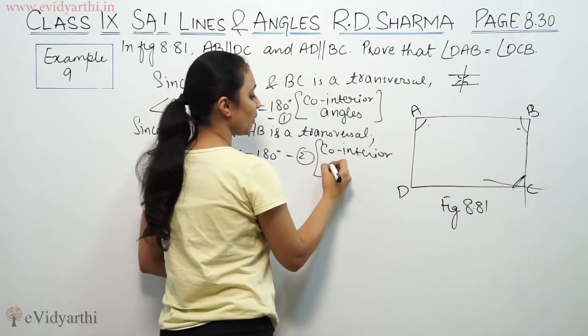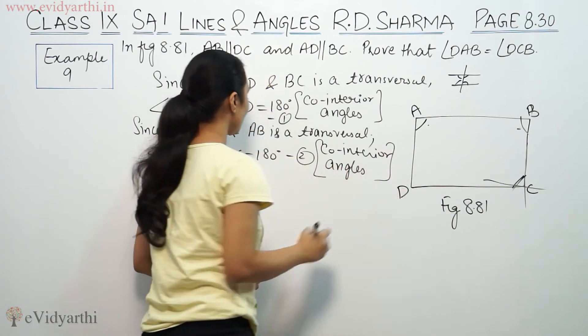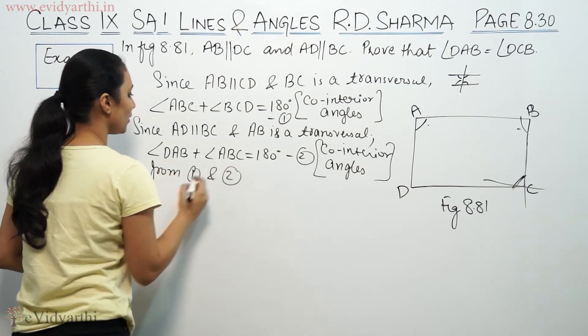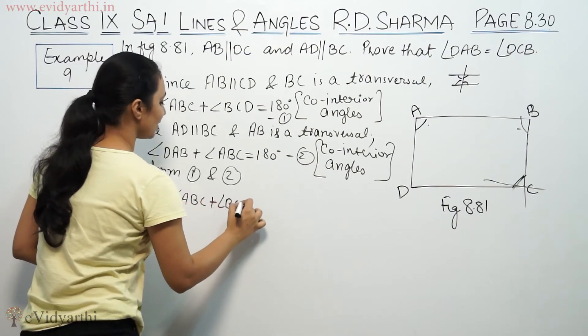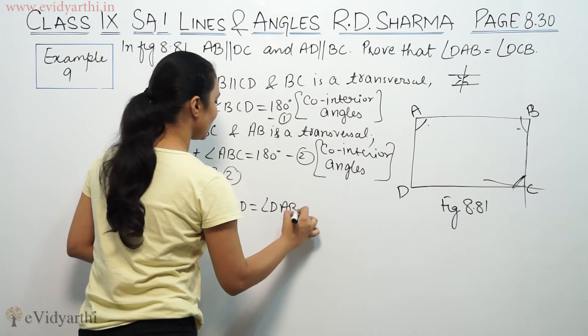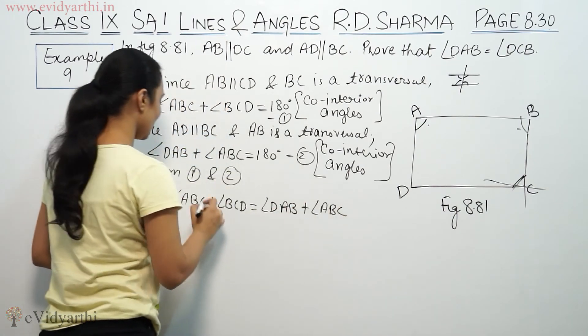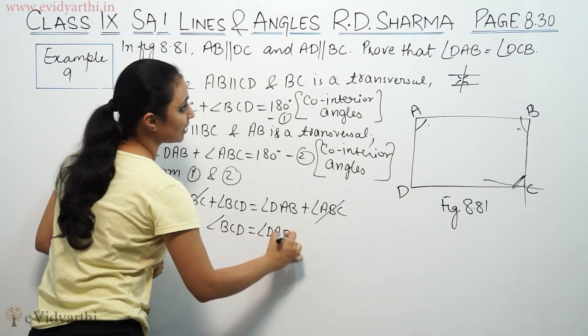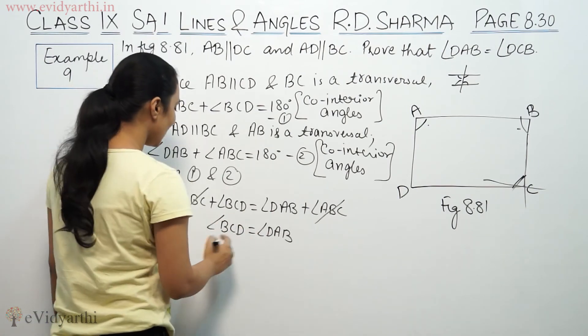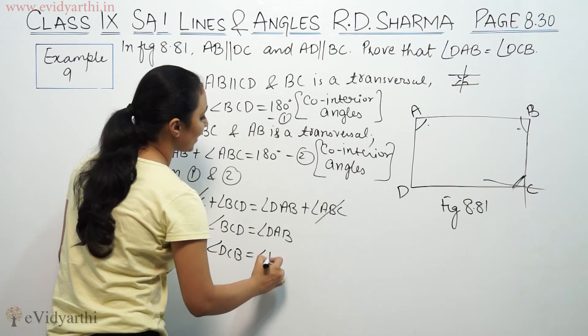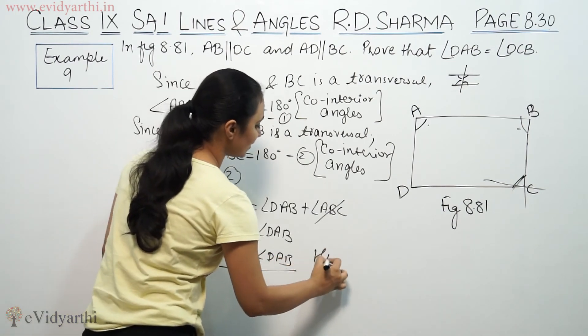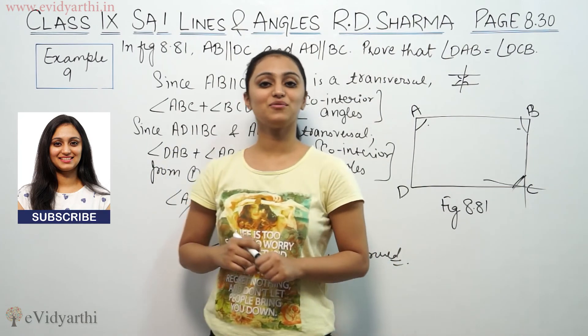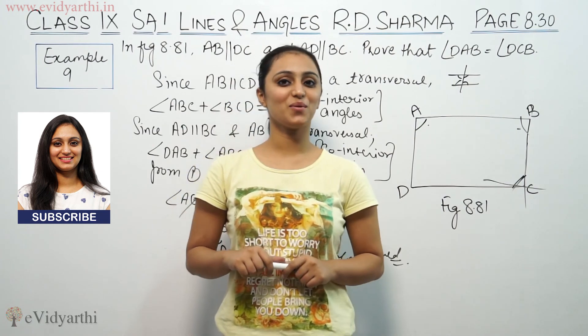Co-interior angles. So from the first and second equations, angle ABC plus angle BCD equals angle DAB plus angle ABC. ABC cancels, so angle BCD equals angle DAB. Therefore, BCD equals angle DAB. So this was example 9 from RD Sharma. See you in the next video for some more questions. Bye bye.